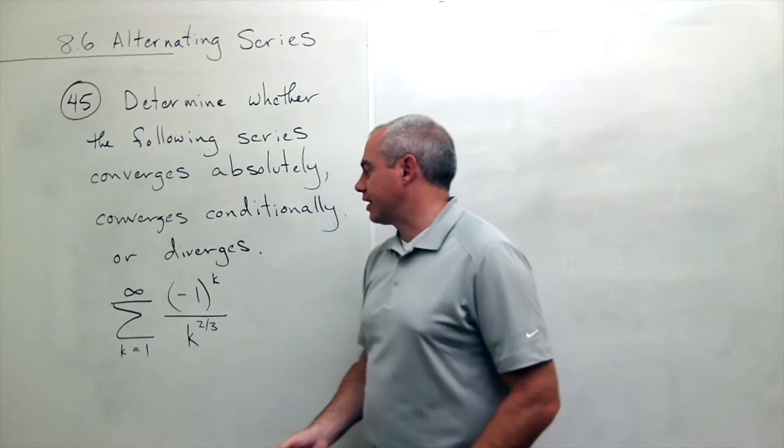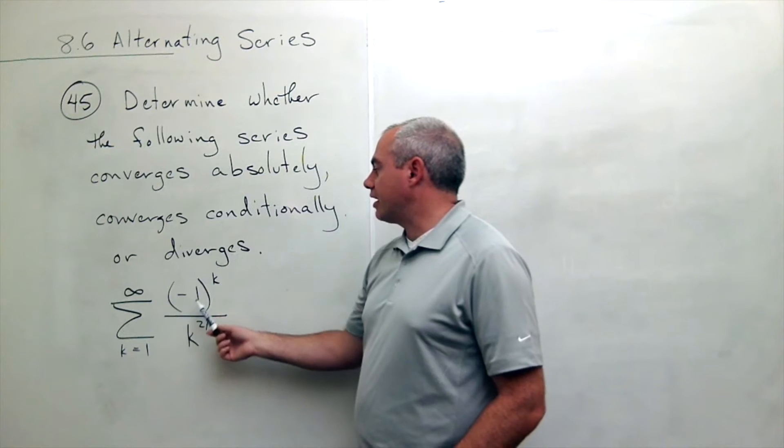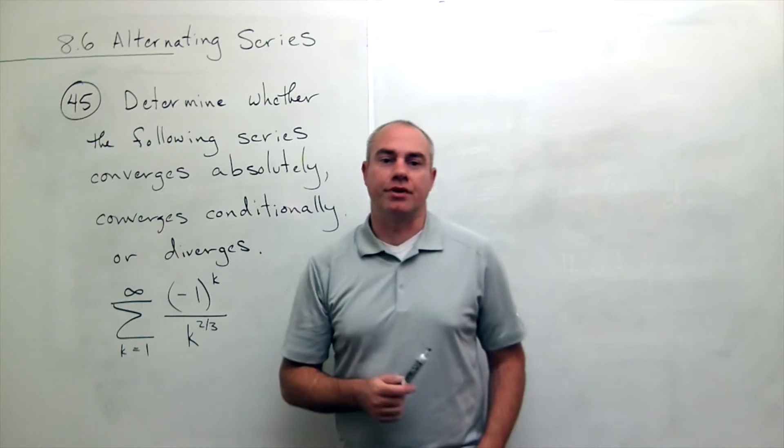Here's my series that I'd like to look at. We've got the sum k going from 1 to infinity of negative 1 to the k divided by k to the 2/3 power.